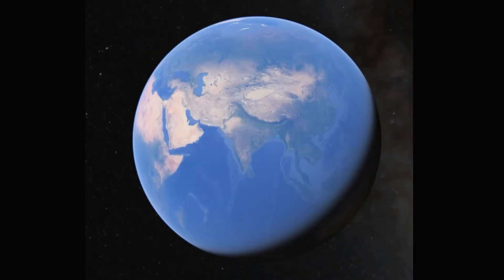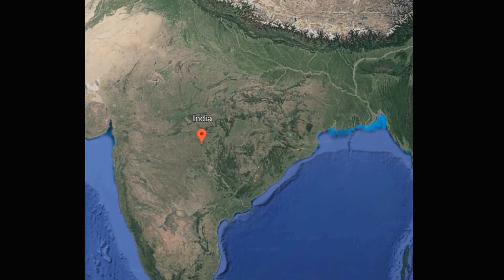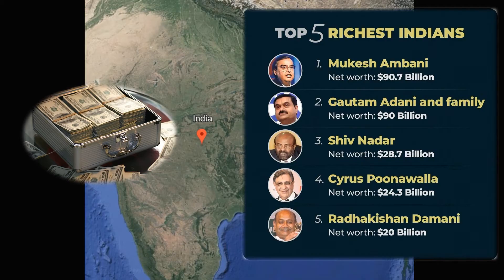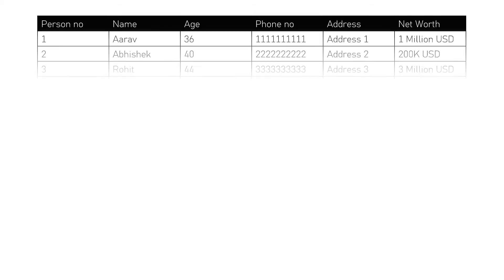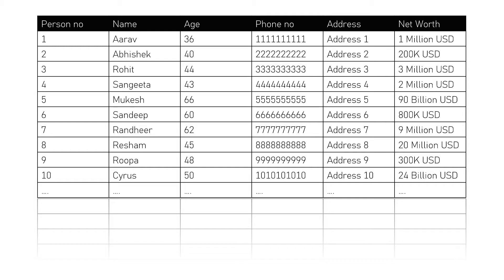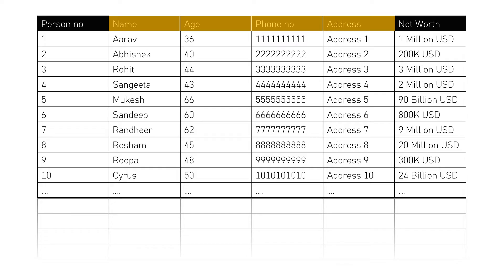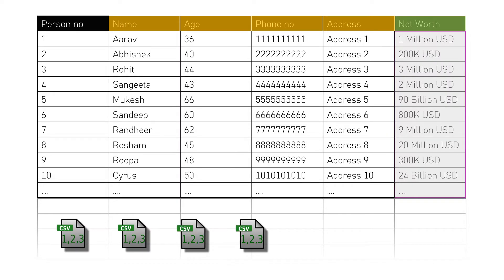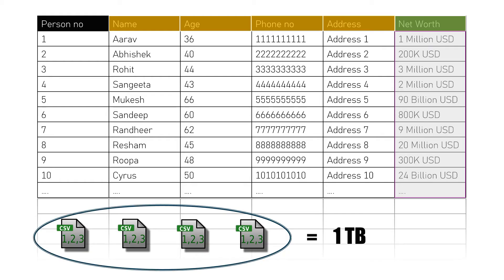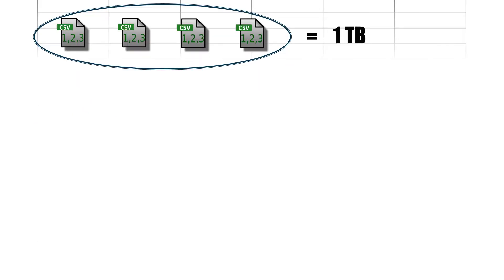Now let's look at what is distributed data processing. Suppose in India we want to find the top five richest Indians. We have data of every person in India — their name, age, phone number, address — but what we need is their net worth, because that tells us who is the richest. This data is stored in files and the size of this data is one terabyte.